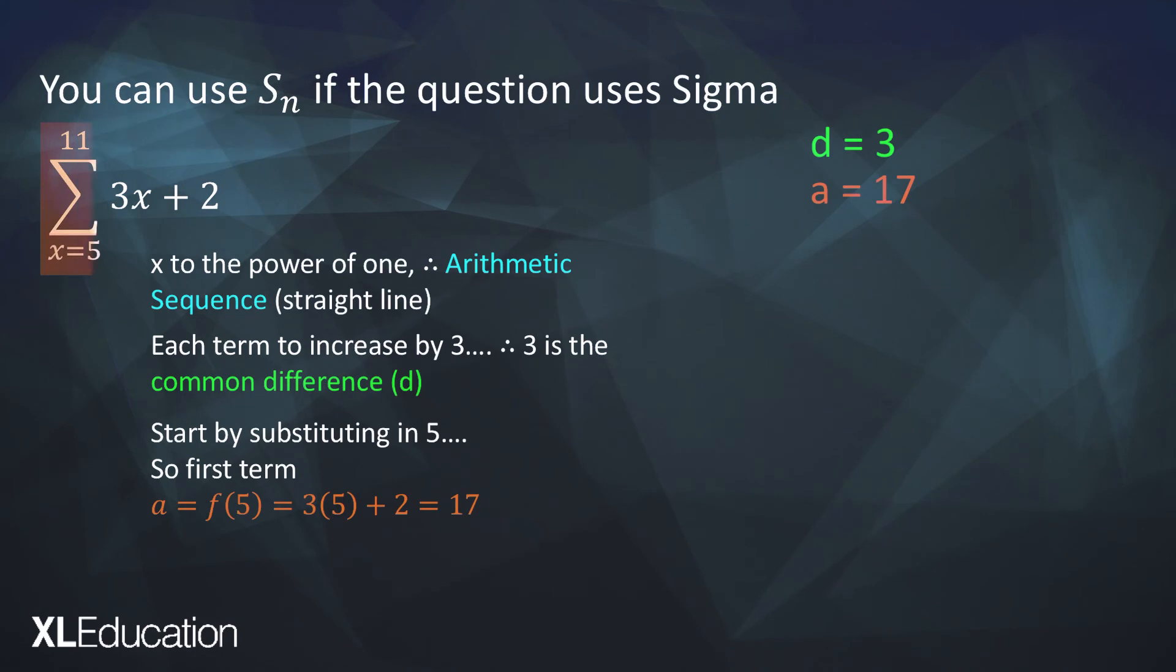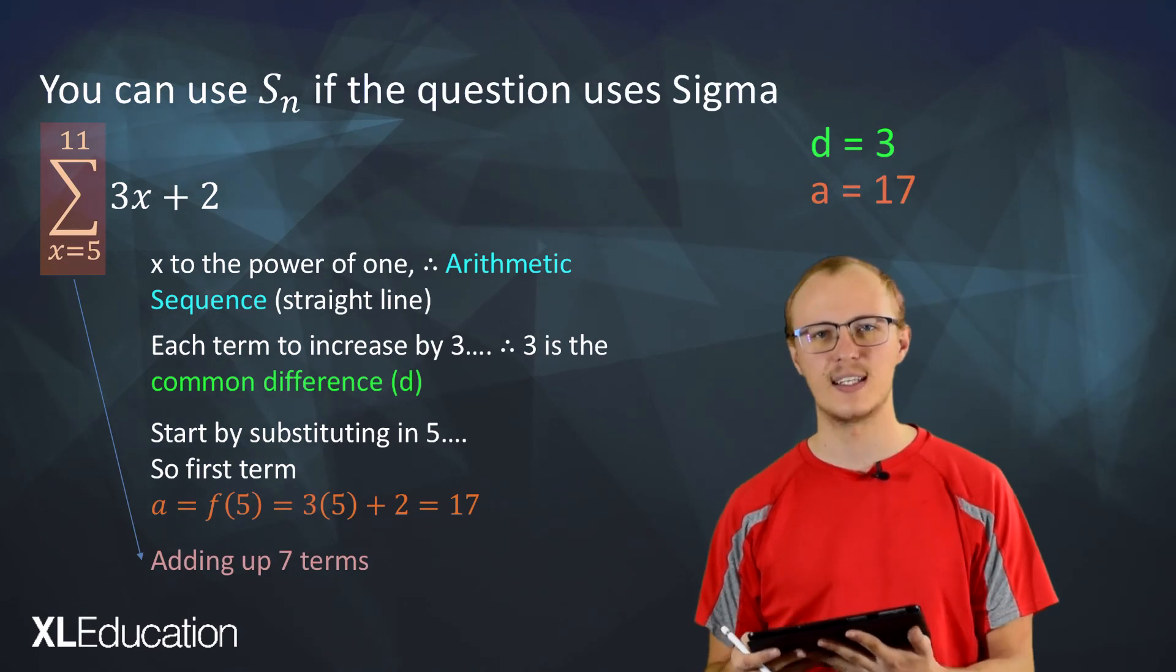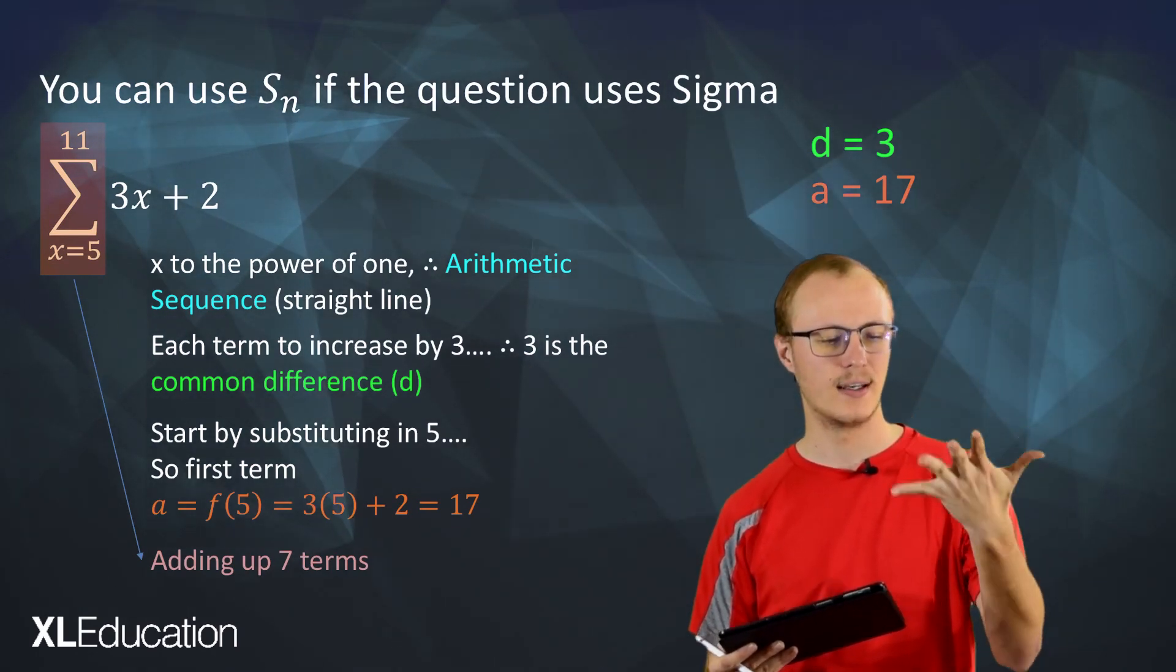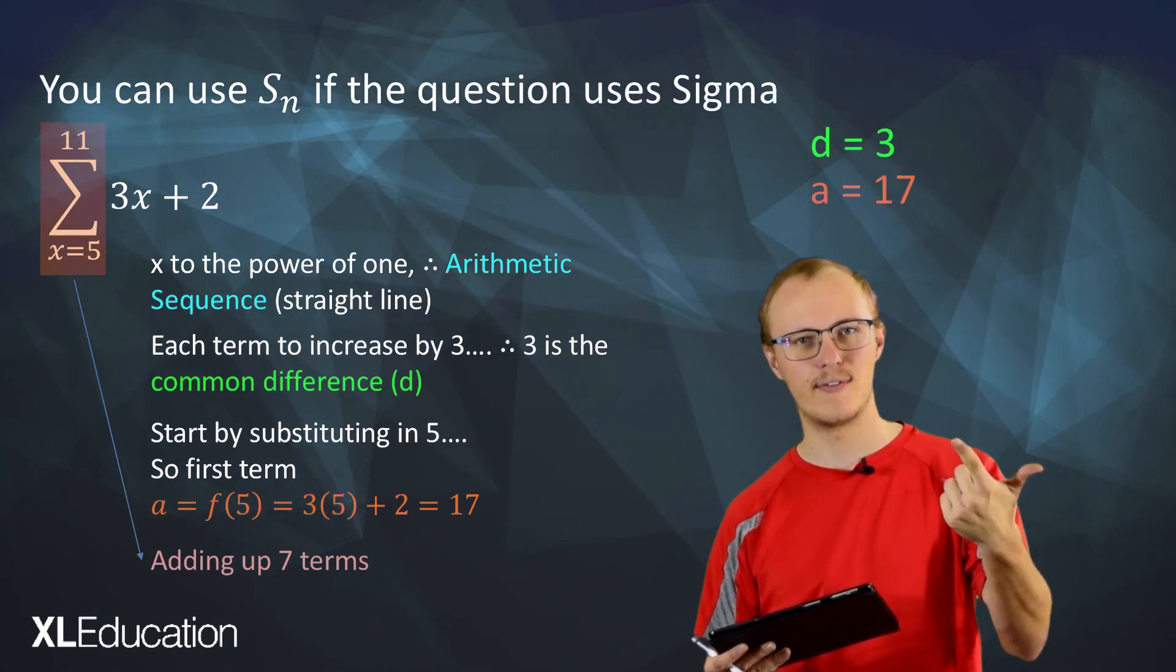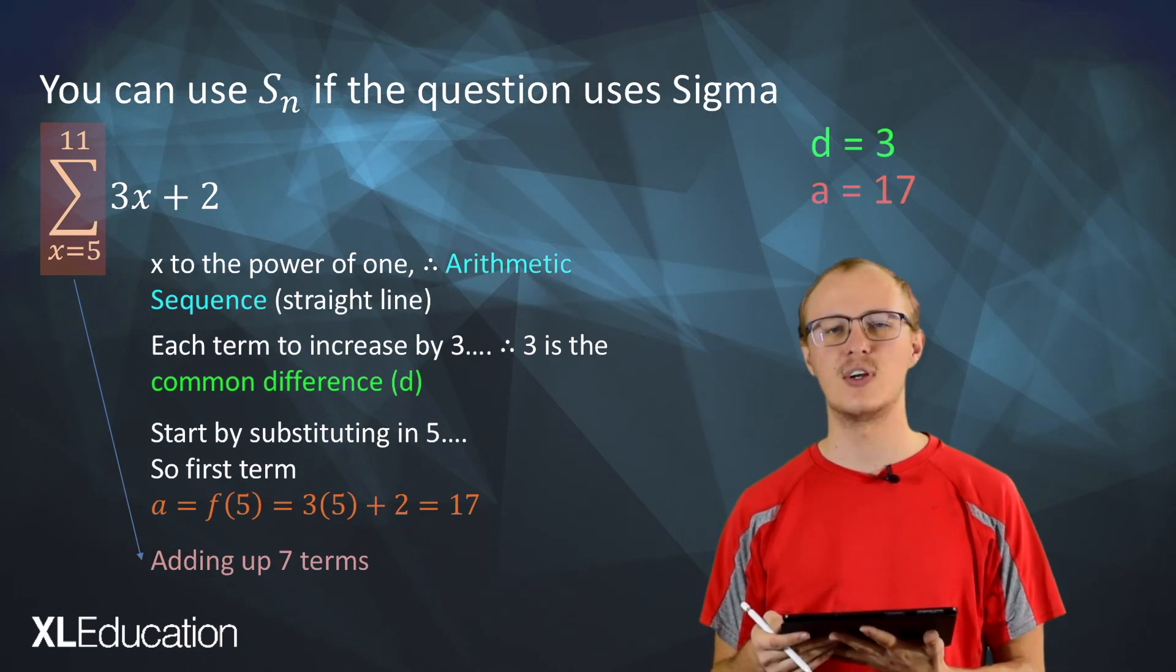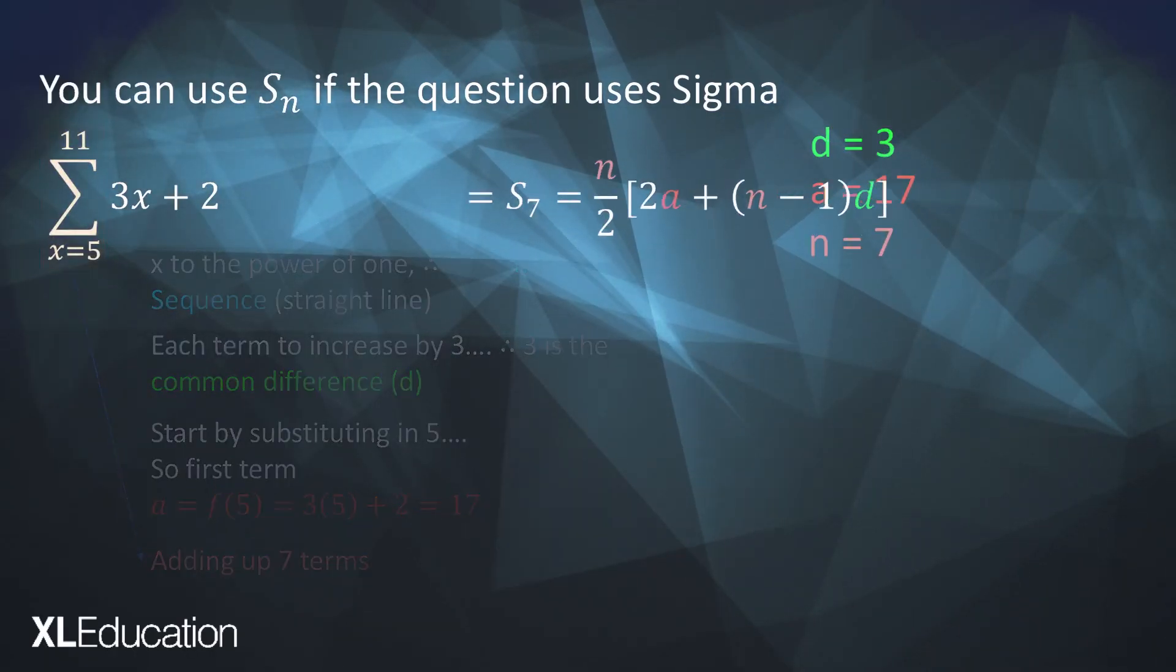And then we need to find n the number of terms that we're adding up. So we start at 5 we end at 11. That's 5, 6, 7, 8, 9, 10, 11. In other words that is 7 different terms that you're adding up. So n is going to be 7.